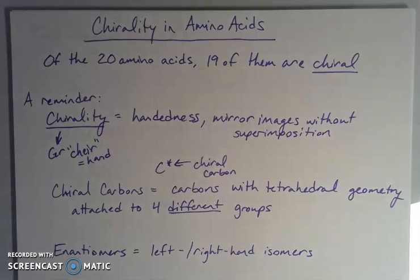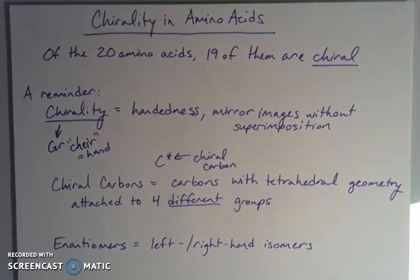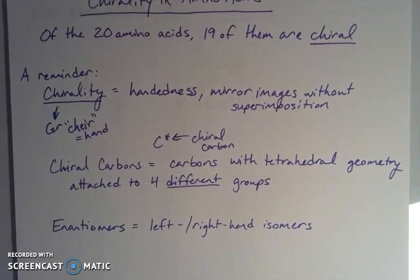In the case of amino acids, the alpha carbon is the one that we're looking at, and this allows for a specific type of isomerism called enantiomers. Enantiomers are left and right-handed isomers, and we can designate the two. There's a couple different types of isomers.